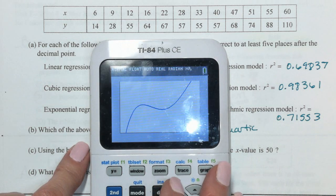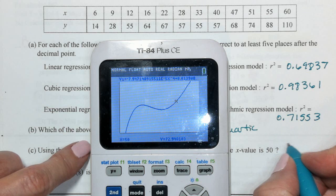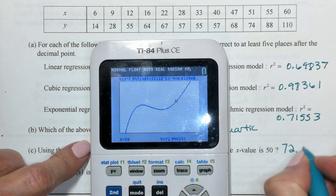So we want the X value to be 50, so trace to 50. And the Y value when X is 50 is 72.940.